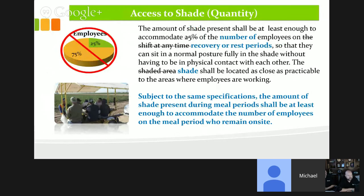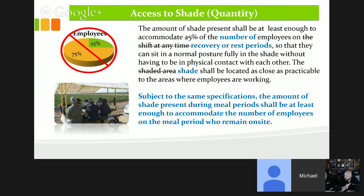Another significant change: you used to only need shade for 25% of your crew. Now you must have shade for the number of employees who would be on a break, rest period, or lunch at the same time. If all employees break at the same time, you need enough shade for all of them. Agricultural, farming, construction, and manufacturing workers outside must all have sufficient shade, or you'll need to stagger lunches and breaks.